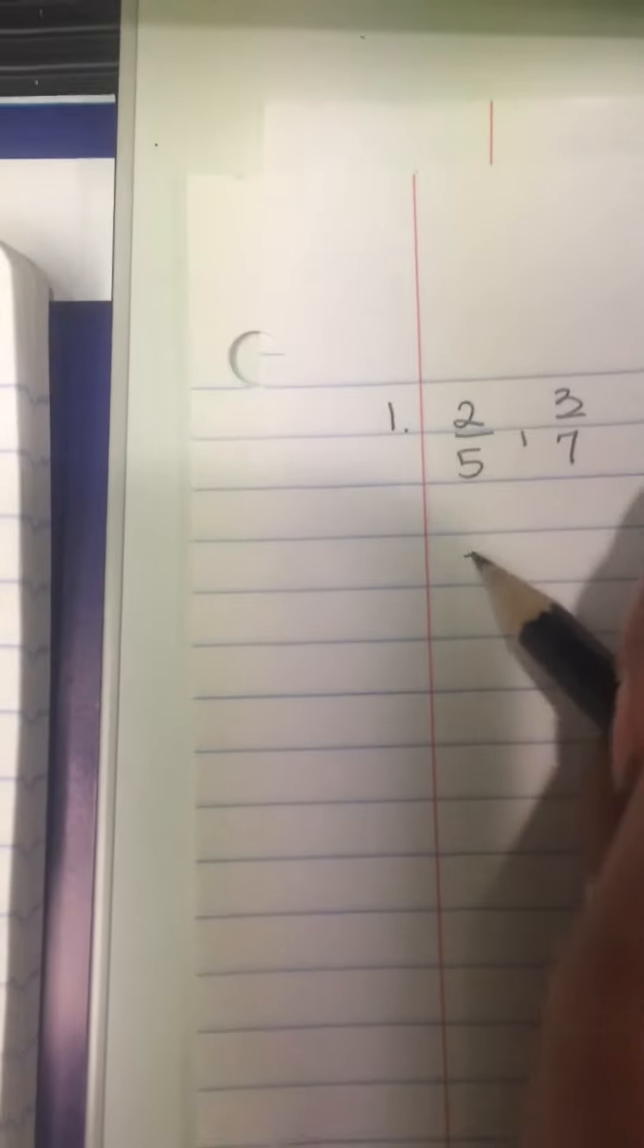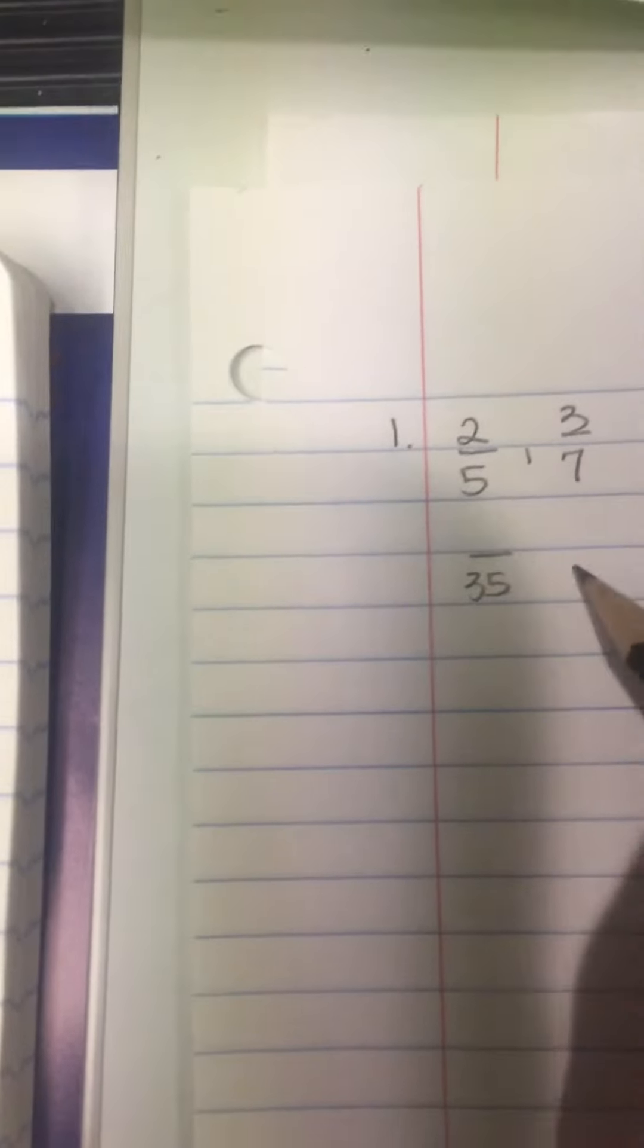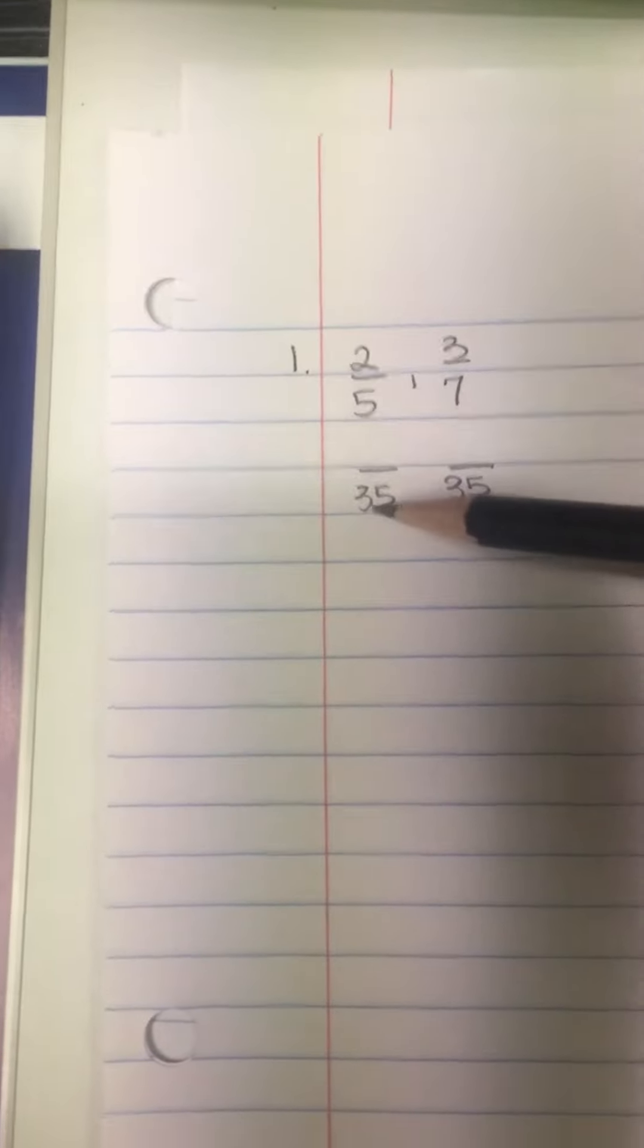So two-fifths and three over seven, okay, so my common denominator will be 35. Next step: five goes into 35 seven times.